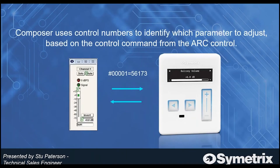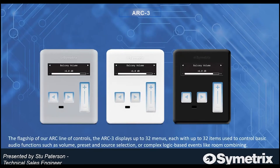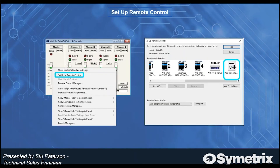Our controllers effectively control parameters within Composer and thus the DSP, based on controller IDs. The flagship ARC 3 is available in three colors: silver, white, and black. The ARC 3 can display up to 32 menus, each with 32 individual items, to control functions such as volume, preset, and source selection, or complex logic-based events like room combining.